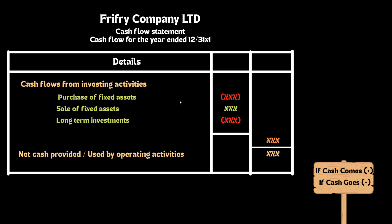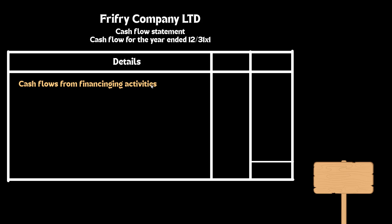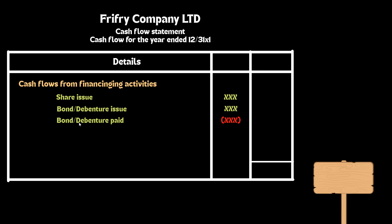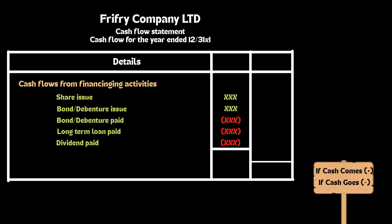After that we have to calculate cash flow from financing activity. If any company issues shares, that will come under this heading. If a company pays any bond or debenture, or issues a bond or debenture, that will also affect here. Any long-term investment and the dividend paid will also be calculated under financing activity. You should remember these five items. Here we will again add the numbers if cash comes in, and if cash goes out we need to deduct the number. If the balance is positive, that will be called net cash provided by financing activities, and if the balance is negative we will call that net cash used by financing activities.